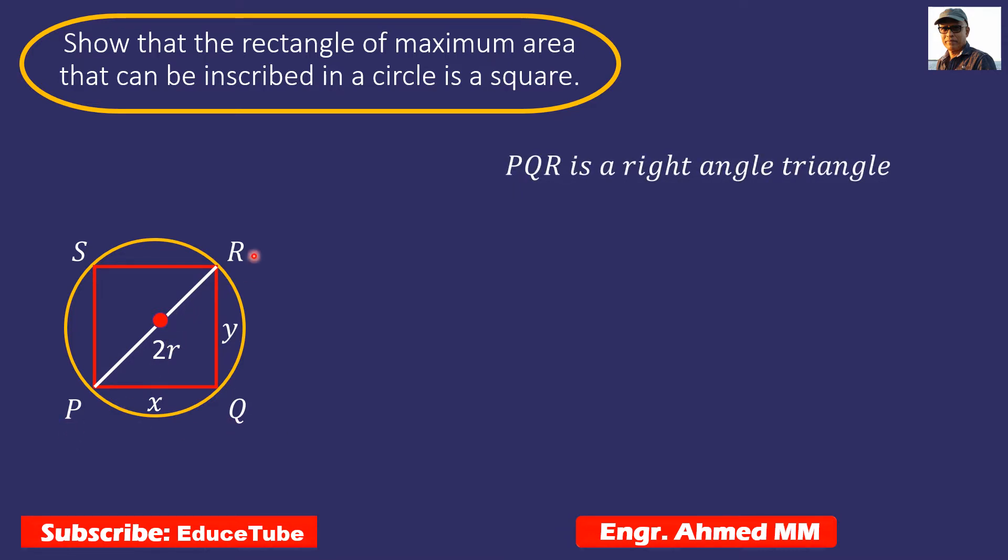This PQR is a right angle triangle. Applying Pythagoras theorem we get x² + y² = (2r)², which we can write as x² + y² = 4r².